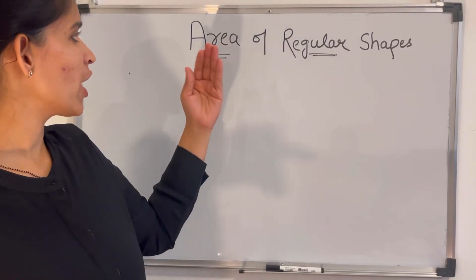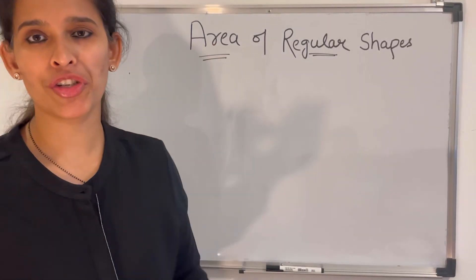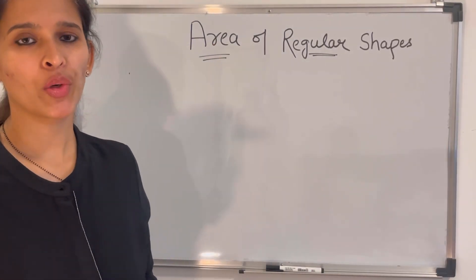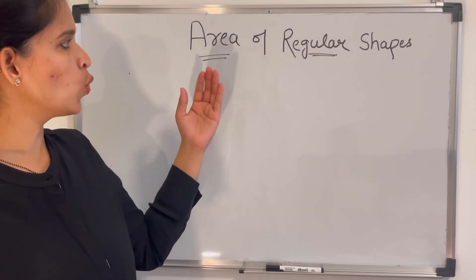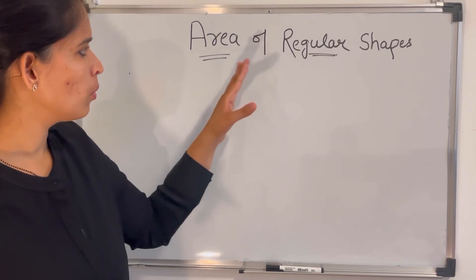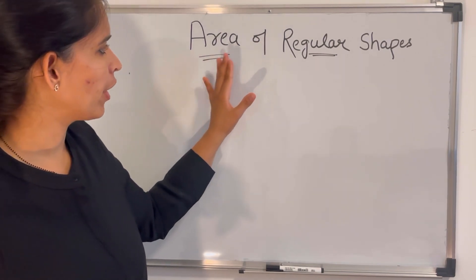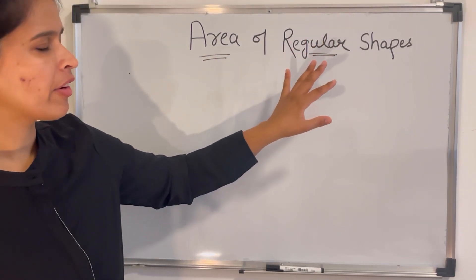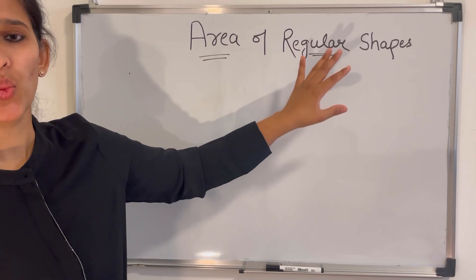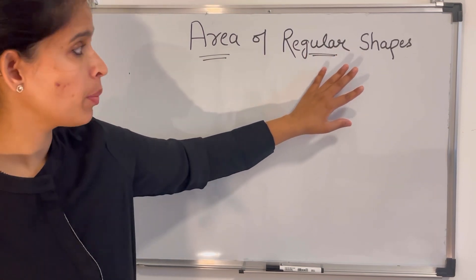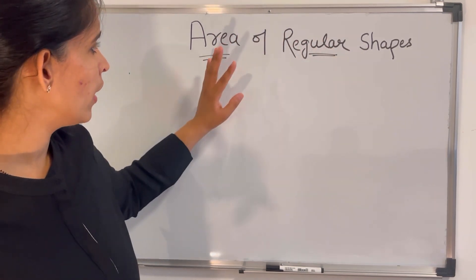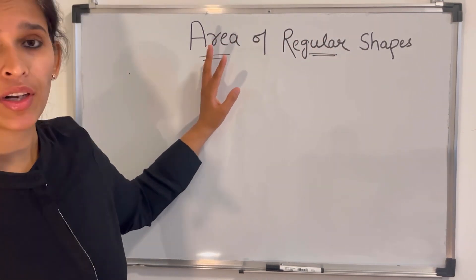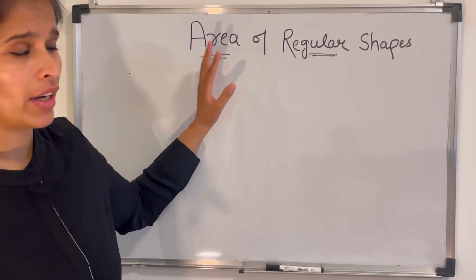Today we are going to learn about area of regular shapes. Here two words are most important: area and regular shapes. We'll first try to understand what a regular shape is, then we'll see what area is.